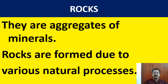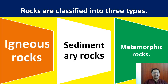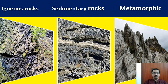Rocks are actually aggregates of minerals and are formed due to various natural processes. Rocks are classified into three types: igneous rocks, sedimentary rocks, and metamorphic rocks. Examples of these rocks are shown in the pictures. The first picture is an example of igneous rocks, the second picture shows sedimentary rocks, and the third is an example of metamorphic rocks.